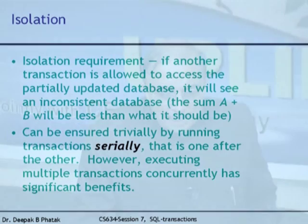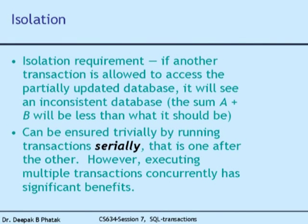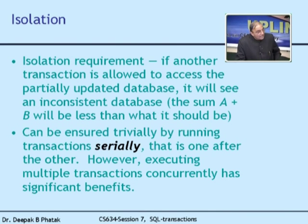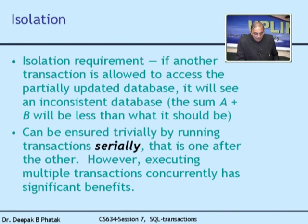The isolation requirement: if another transaction is allowed to access the partially updated database, it will see an inconsistent database. This can be guaranteed trivially by running transactions serially — one after the other. However, executing multiple transactions concurrently has significant benefit. There is no point in a huge server that executes only one transaction at a time. The goal is to execute transactions concurrently but give the appearance of logical serial execution. That is the purpose of isolation.